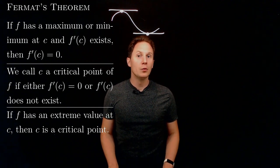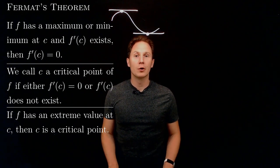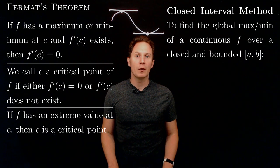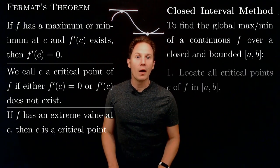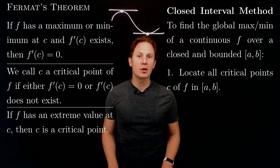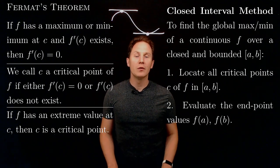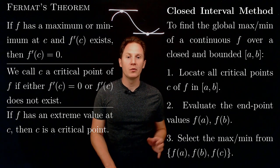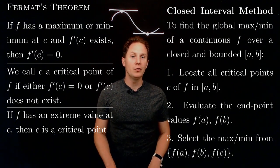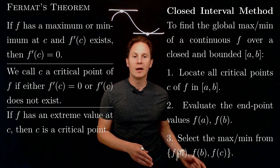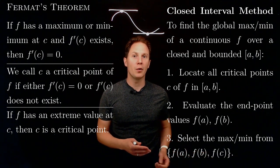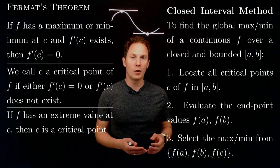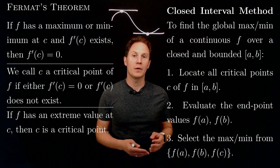To find the global maximum or global minimum of a continuous function over a closed interval, you can use the closed interval method, which consists of three steps. Step one: locate all critical points of the function in that closed interval. Step two: evaluate the endpoint values, f(a) and f(b). Step three: select the largest and smallest values from the endpoint values and the values at the critical points — the largest is the global maximum, the smallest is the global minimum.